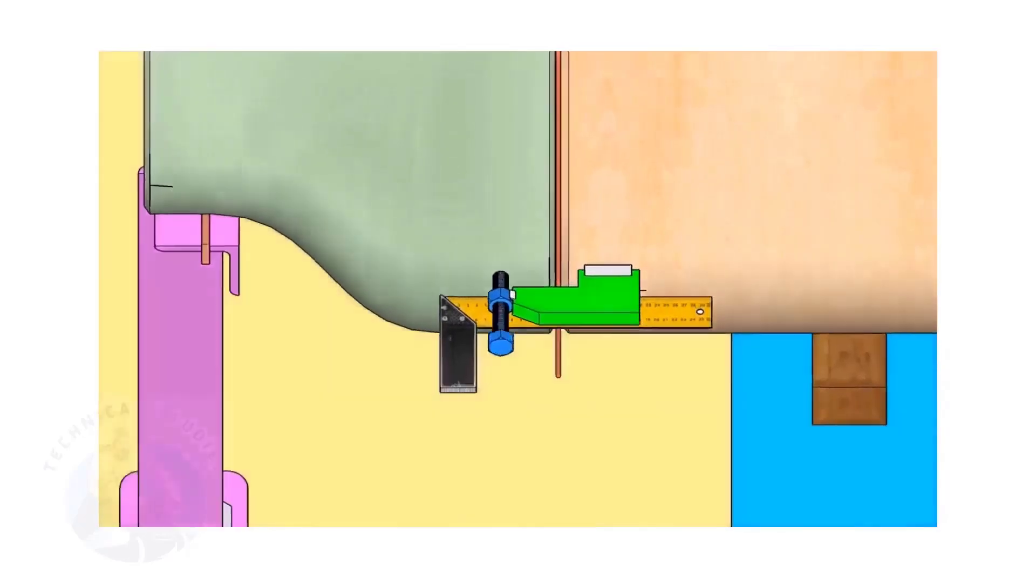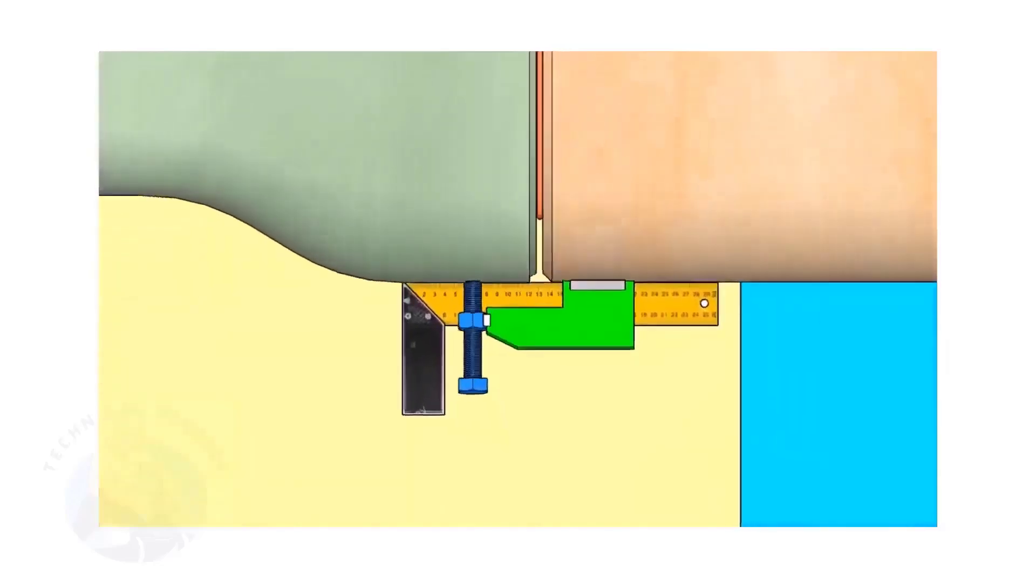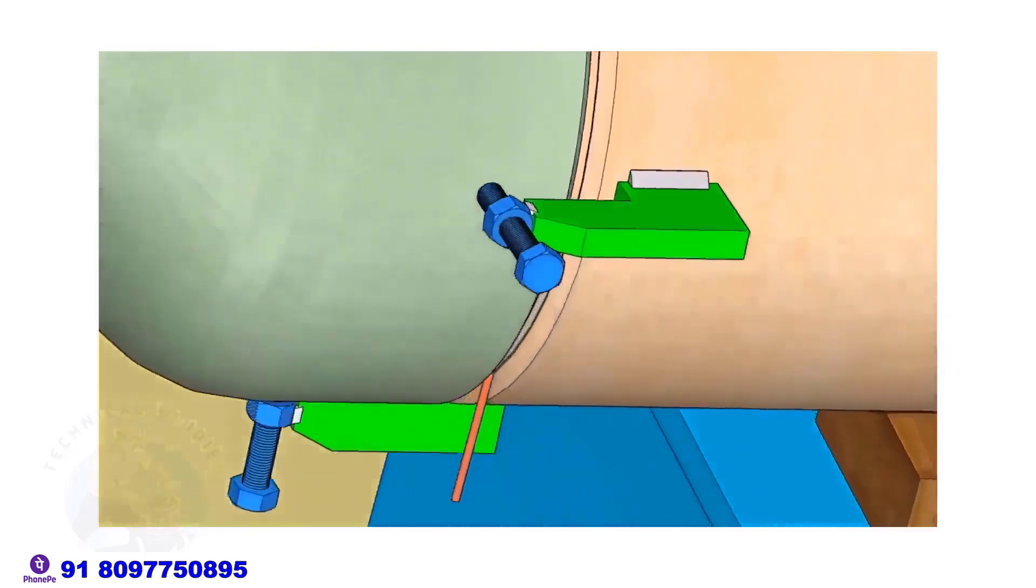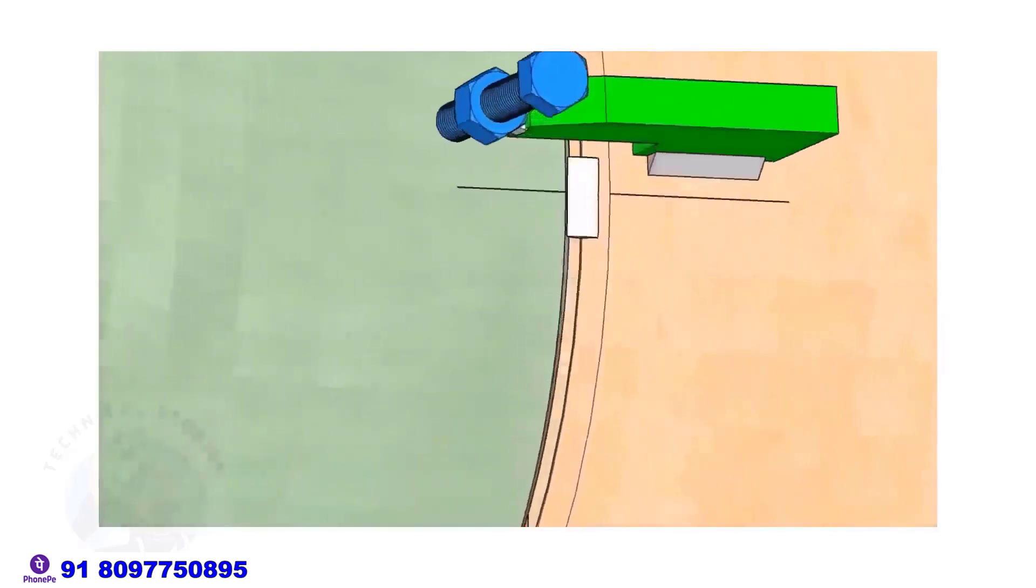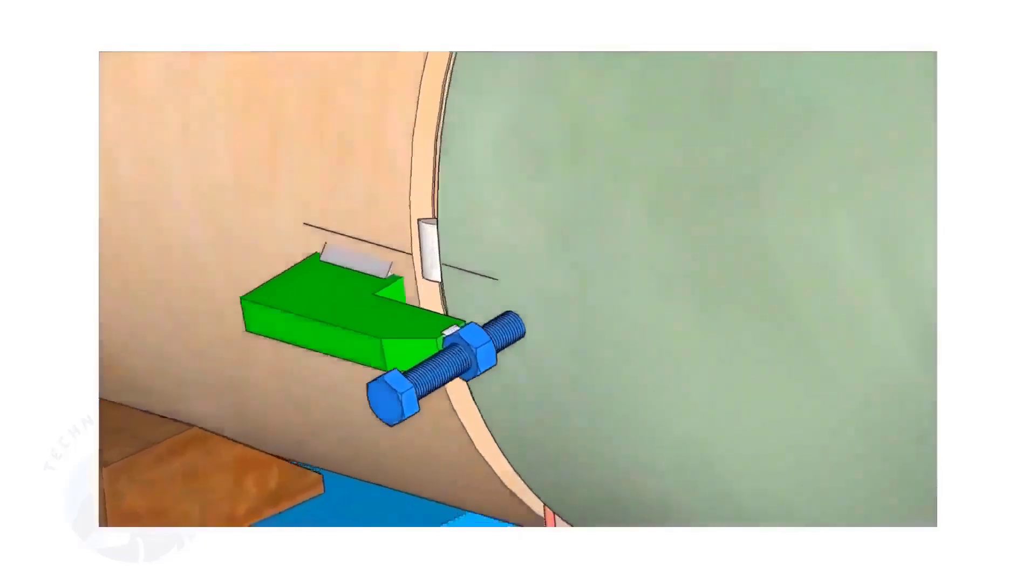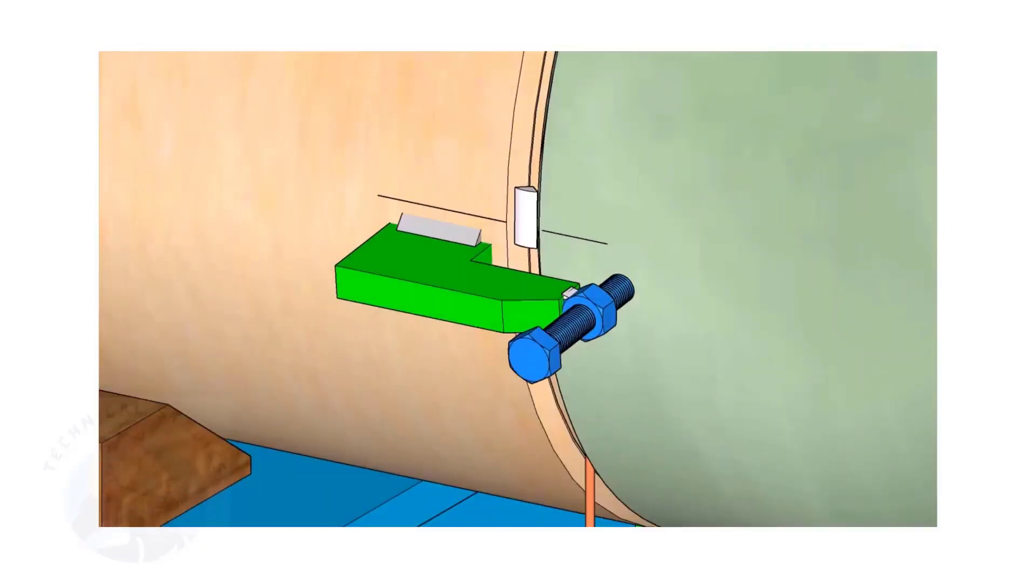Correct the straightness of the joint on both sides. If required, remove the gap rod. Tack weld on both sides. Thank you for watching.